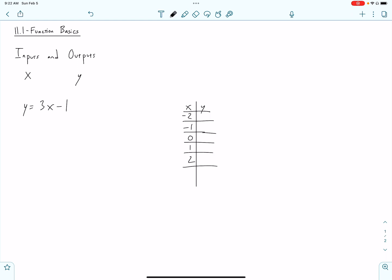If x is negative 2, plug that in there, you get y equals 3 times negative 2 minus 1, which is negative 7. If x is negative 1, you get y equals 3 times negative 1 minus 1, which is negative 4, and so forth. And we can see a pattern here. I think it's minus 1, 2, and 5.